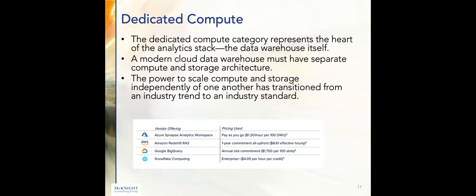Now getting into the more quantifiable stuff: dedicated compute represents the heart of the analytics stack — the data warehouse itself. All the vendors have pricing broadly similar to what you see here. They're all doing enterprise agreements, but not every enterprise needs that or will find it makes sense. Even though it's pay-as-you-go, vendors like the bigger commitments as that helps their cash flow. You can proof-of-concept on a pay-by-the-hour rate, but you'll want to explore enterprise options eventually. Google has the notion of 'slots,' while others use what's more or less called a 'node.'